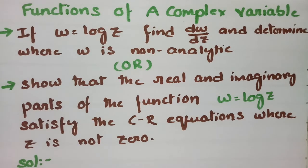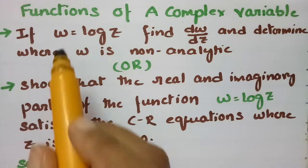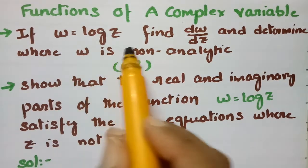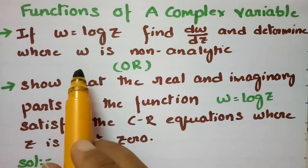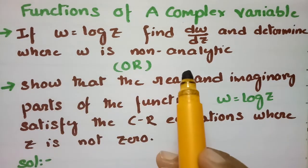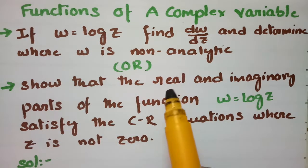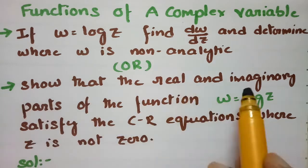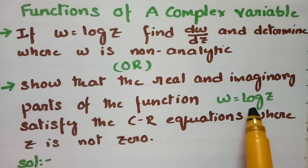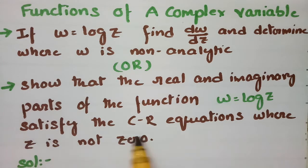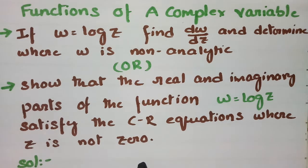Today's video I am going to explain the most important problem from functions of a complex variable. If w is equal to log z, we have to find dw by dz and determine where w is not analytic. Or it can be asked: show that the real and imaginary parts of the function w = log z satisfy the CR equations where z is not zero.